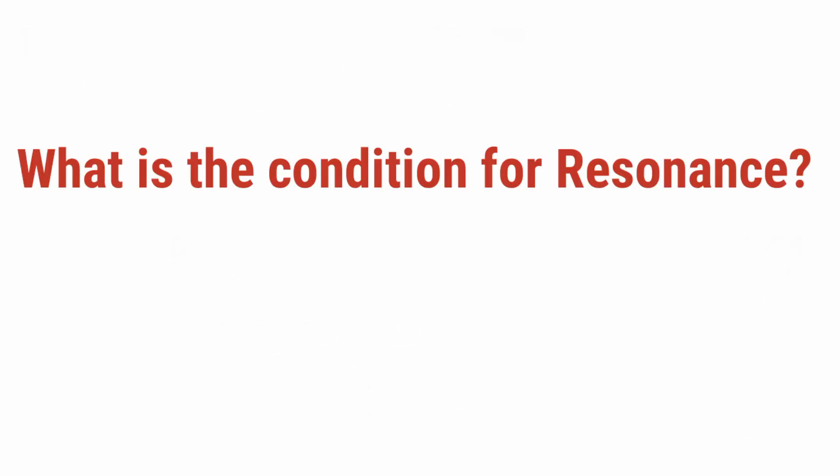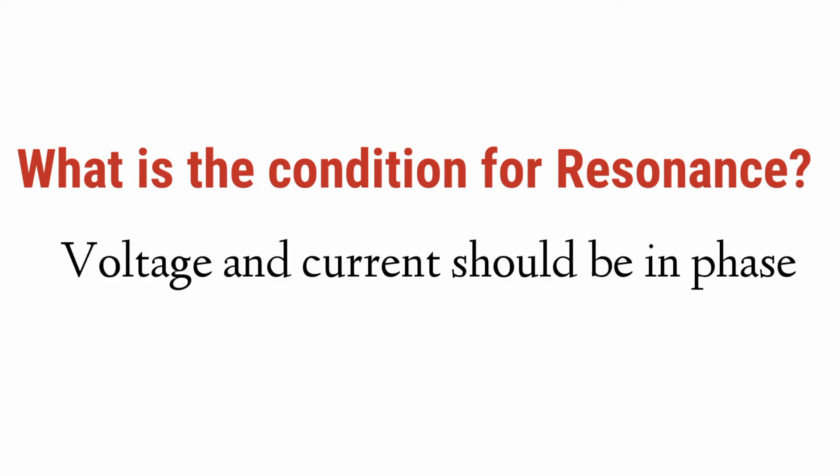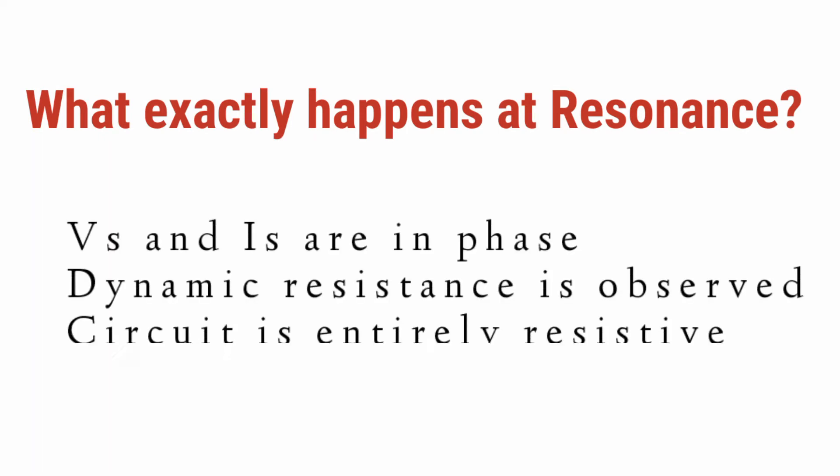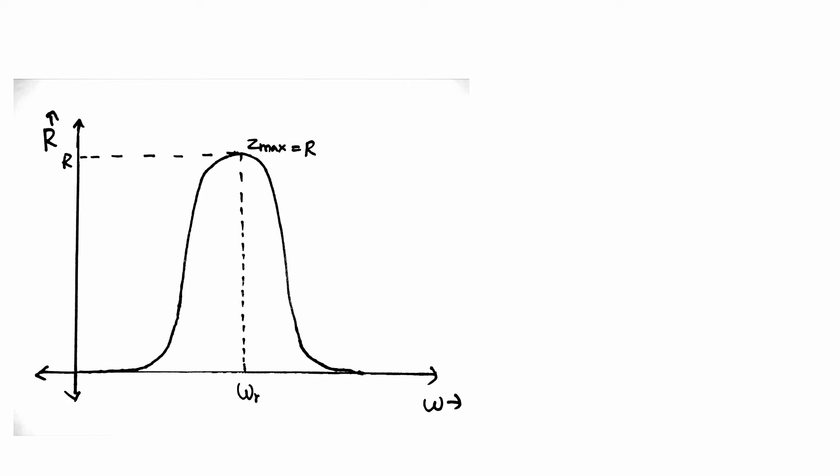What is the condition for resonance? Voltage and current should be in phase. What exactly happens at resonance? Voltage and current are in phase, dynamic resistance is observed, the circuit is entirely resistive, the current value is minimum, and X_L equals X_C.